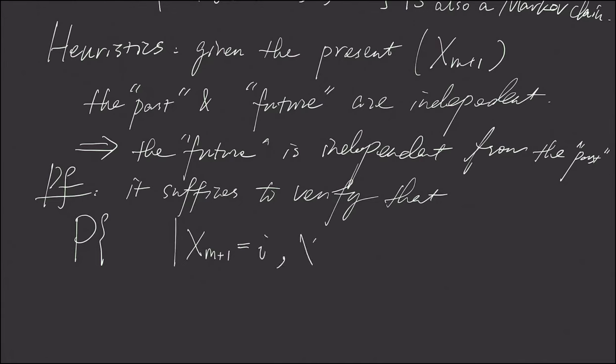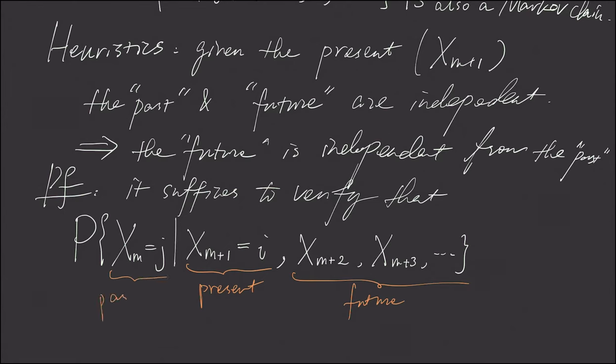And we also know all these future states where we are, and we are curious what is this conditional probability of the past. This is the present, and these are future, and this is one step to the past. The probability without all those future states.